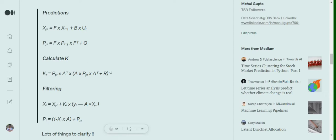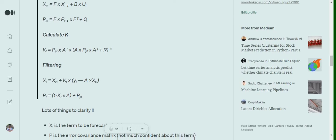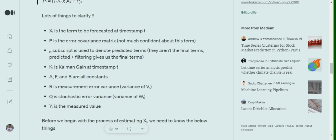So the filtering part, you can see that how the predicted values are used to get to the final value. In the predicted value, you can see that we are using the predicted value. We are also using Kalman filter or the Kalman filter constant that has been calculated and also the measured value as well. And P_t is again getting updated. That is the error covariance matrix.